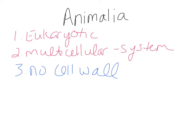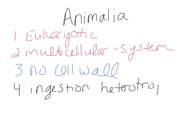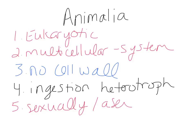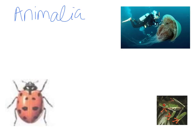Animals are ingestion heterotrophs — we actually eat food and digest it inside of us, compared to absorption heterotrophs that digest food outside their body and then absorb the nutrients. As a general rule, animals do sexual reproduction, though there are a few that can reproduce asexually or convert to asexual reproduction if they have to. Animals are also obviously motile — and as a general rule, highly motile. They can move around significantly.